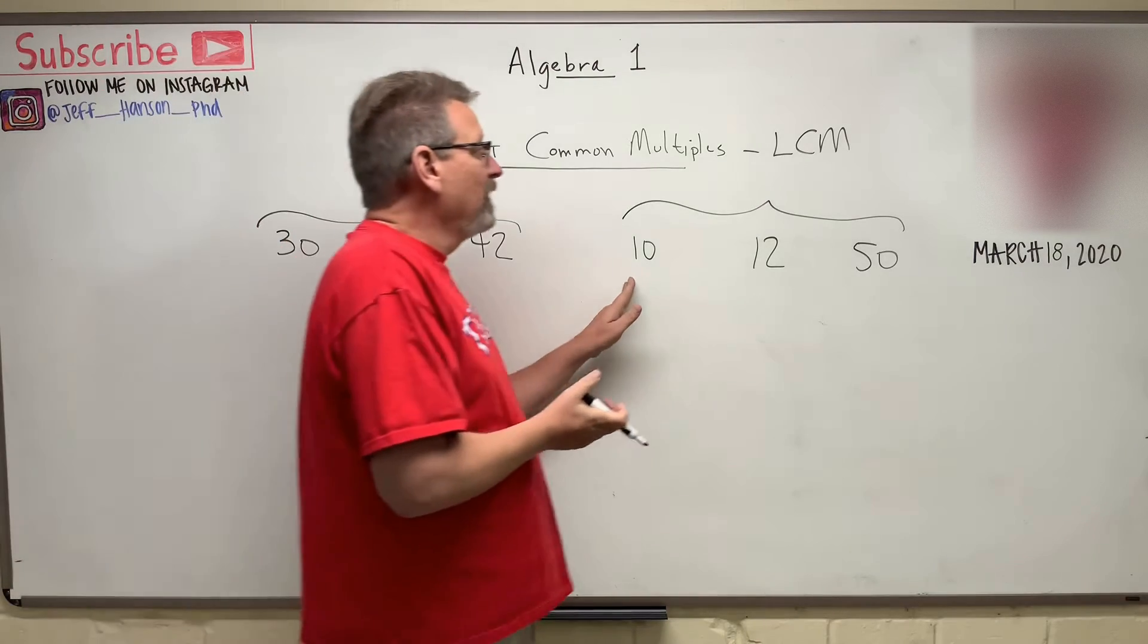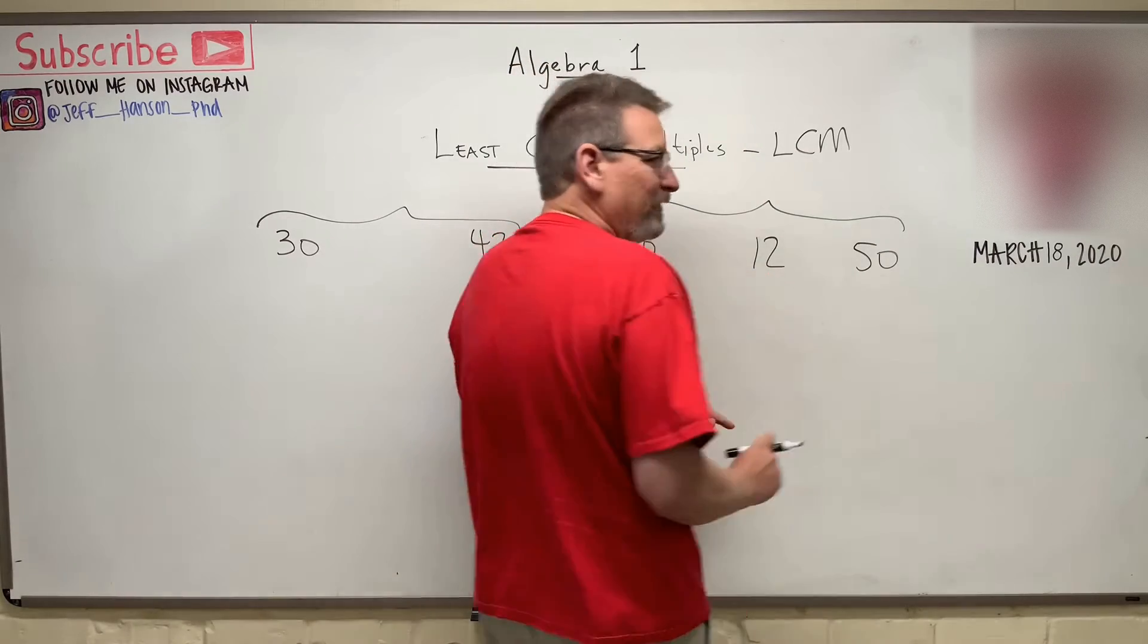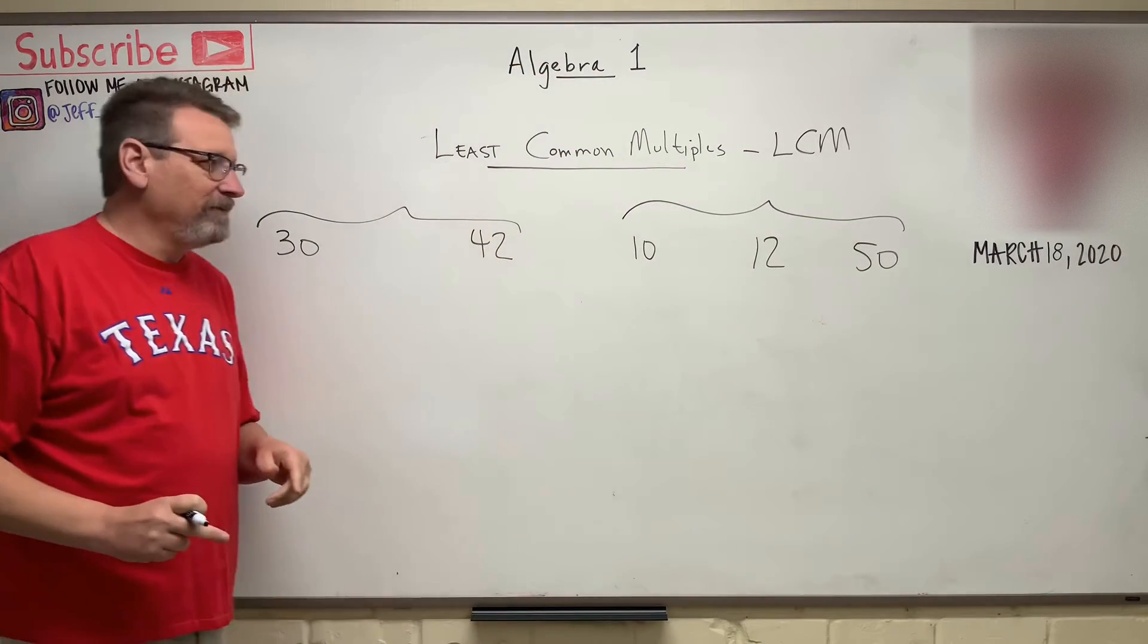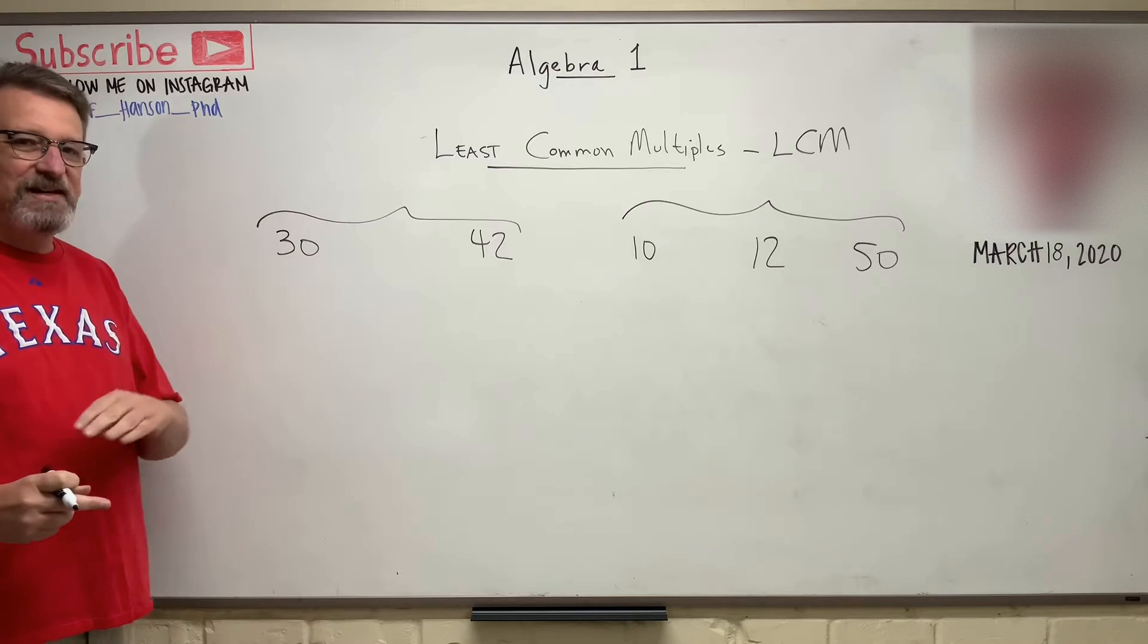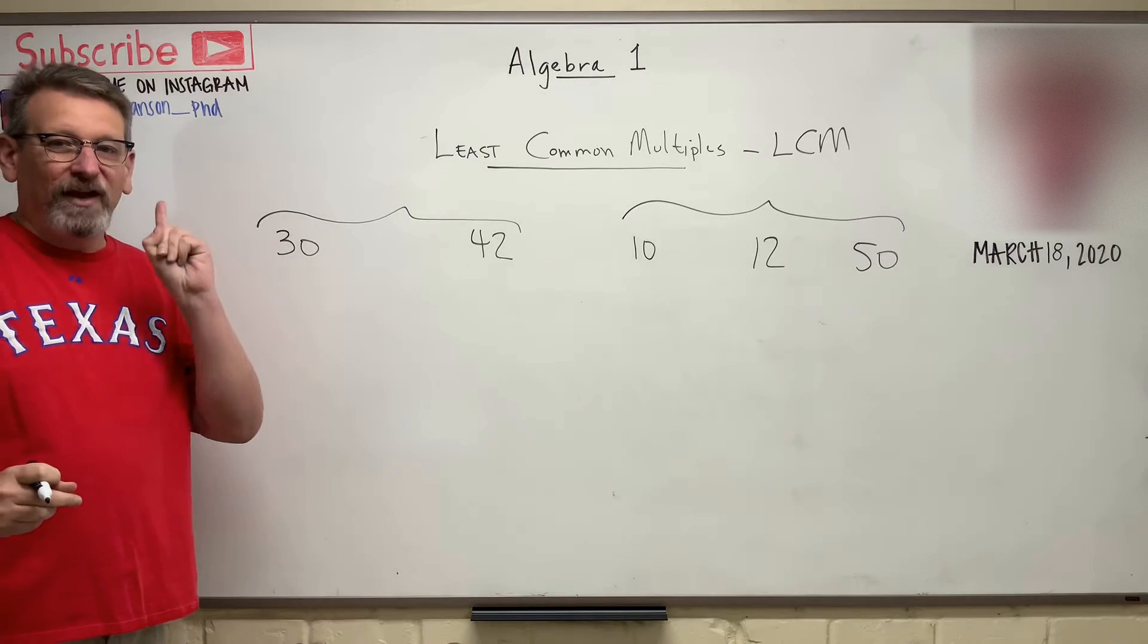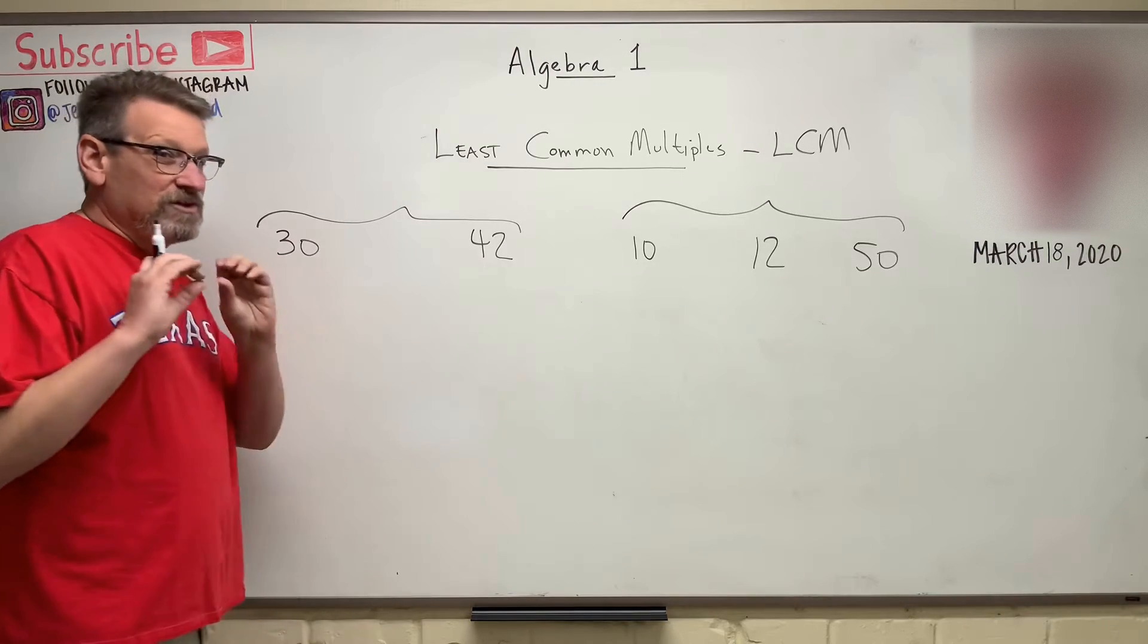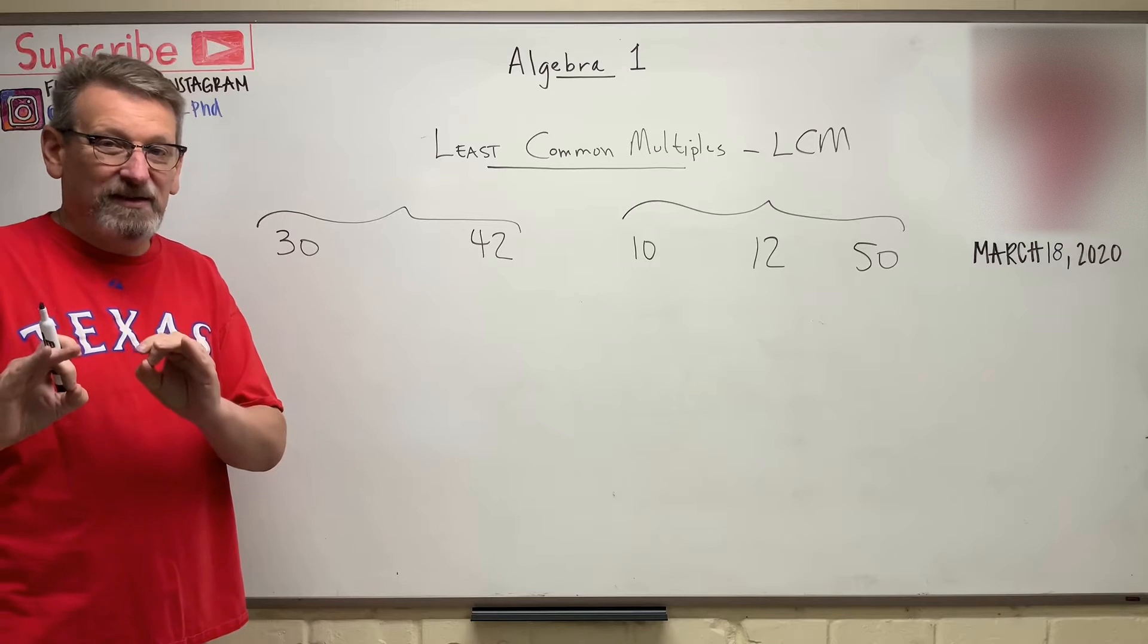In this one, we're going to find the smallest number that all three of those things will go into, that will divide into. Let's see if we can figure out how to do that. We're going to do that by using what's called a factor tree. So we're going to factor these things into the smallest prime number that we can get them into.